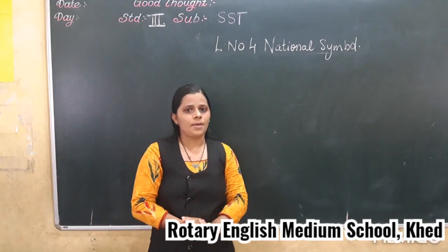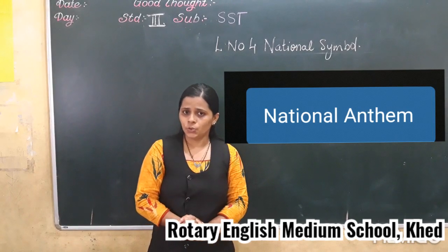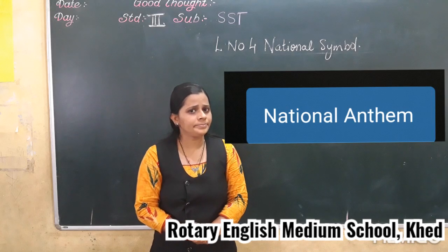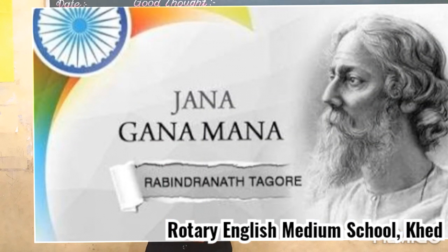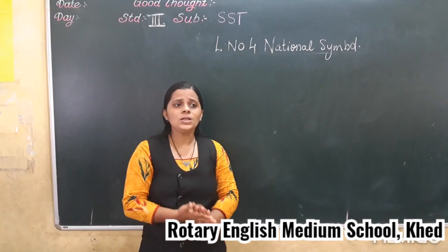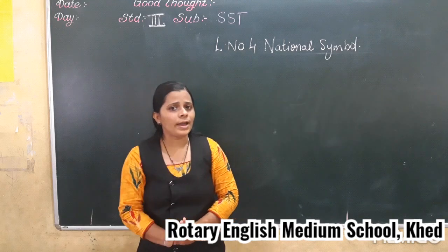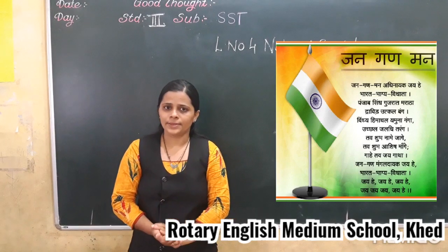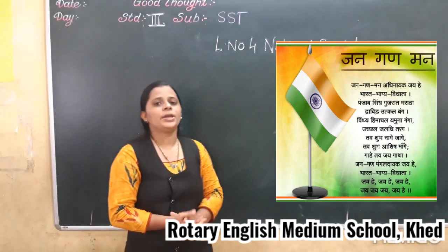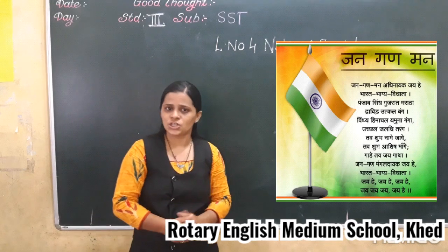Now we will discuss the third symbol, that is the national anthem. Do you know who has written our national anthem? The great poet Rabindranath Tagore has written the national anthem. If you see the whole song, it is of five stanzas. Out of five, only the first stanza is taken as our national anthem. And this was adopted on 24th January 1950 as our national anthem.